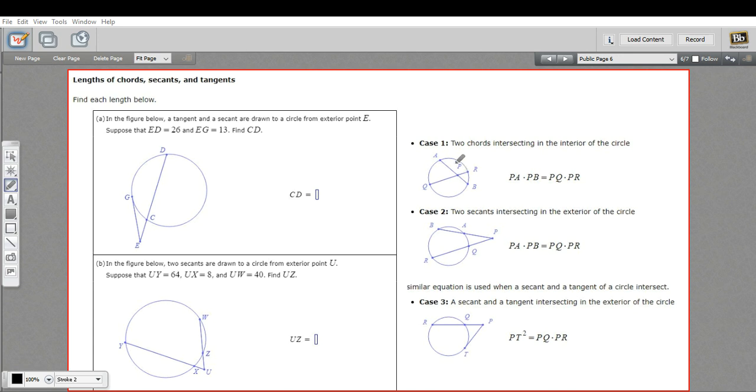In the first case, you have two chords that cross each other. And in that case, if you multiply each half of the chord, so AP times PB, it is going to be the same as if you multiplied the two halves of the other chord, so QP times PR. So that's if those chords intersect.